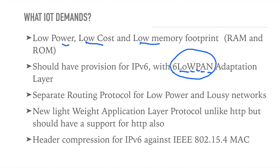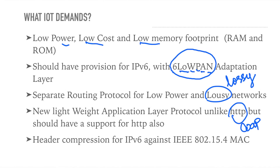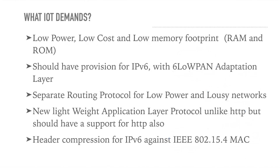6LoWPAN has a separate adaptation layer. A separate routing protocol is needed for low power and lossy networks — IoT networks are lossy networks where packet loss is very high, unlike wired or typical wireless networks. A new lightweight application layer protocol is also needed; unlike HTTP (which has huge headers disadvantageous for IoT), we use CoAP — Constrained Application Protocol. Header compression for IPv6 runs over IEEE 802.15.4, which 90% of IoT hardware devices support.